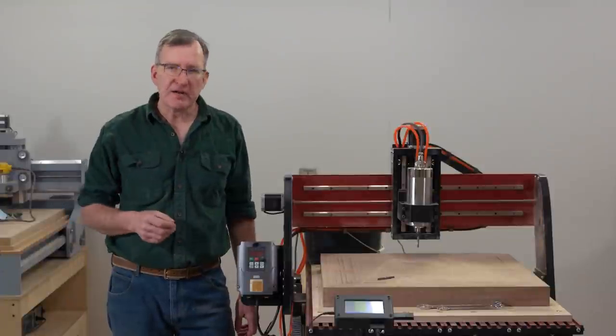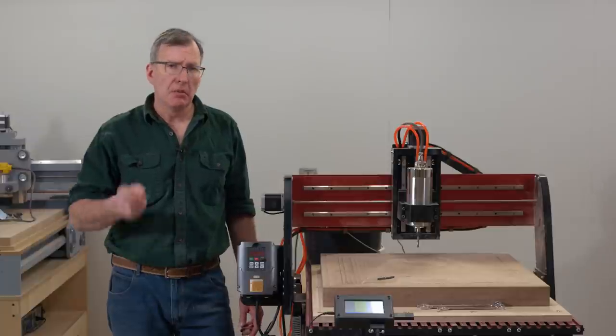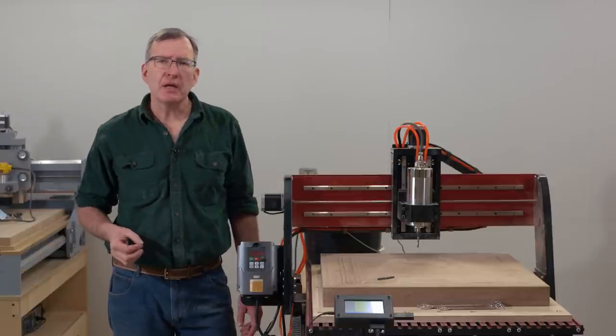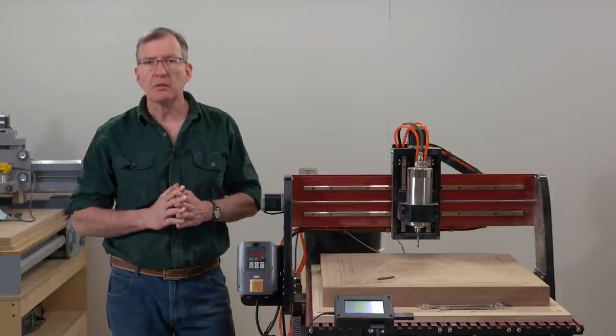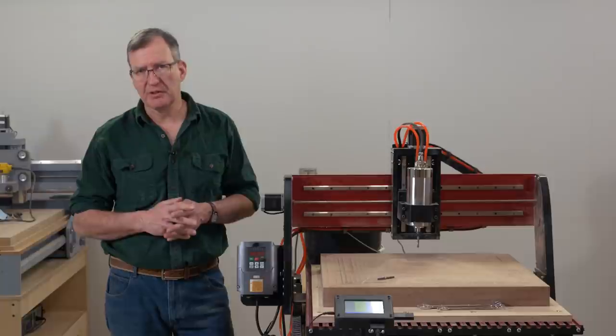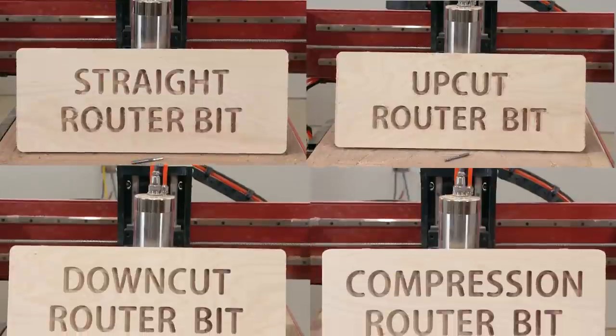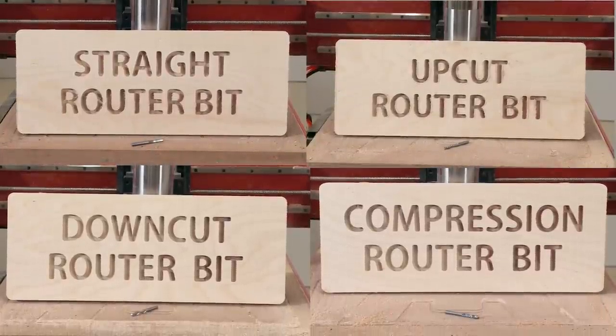I cut a lot of different materials on my CNC router: brass, solid wood, plastic, aluminum. The one I cut more than any is plywood, so I thought it would be a great topic to learn how to cut plywood properly with all the different bits available. Today I'd like to discuss and demonstrate a straight router bit, an up cut, a down cut, and a compression router bit.